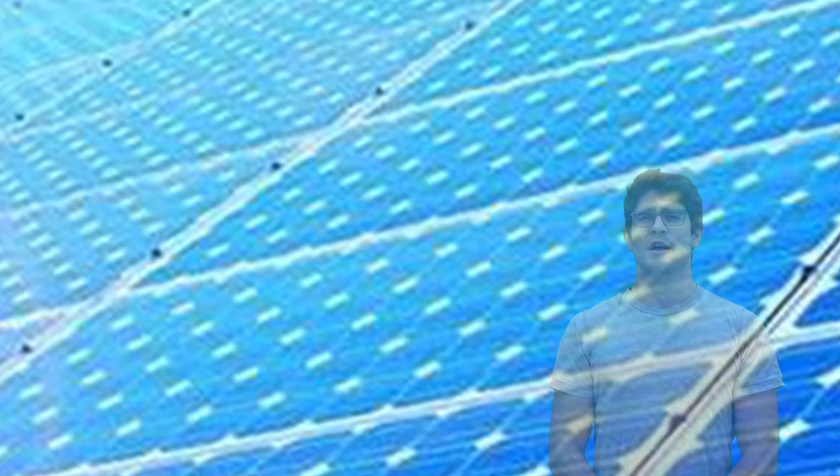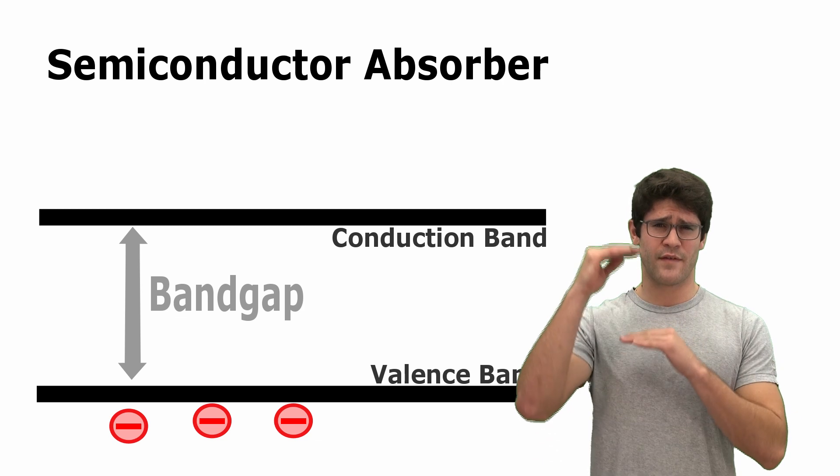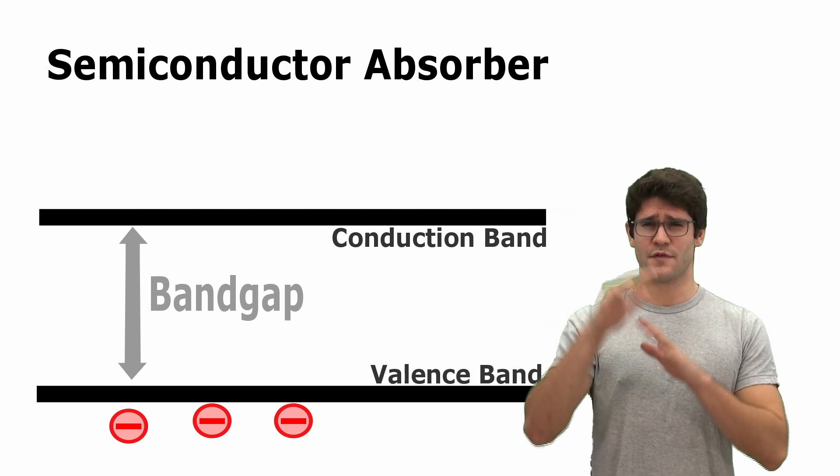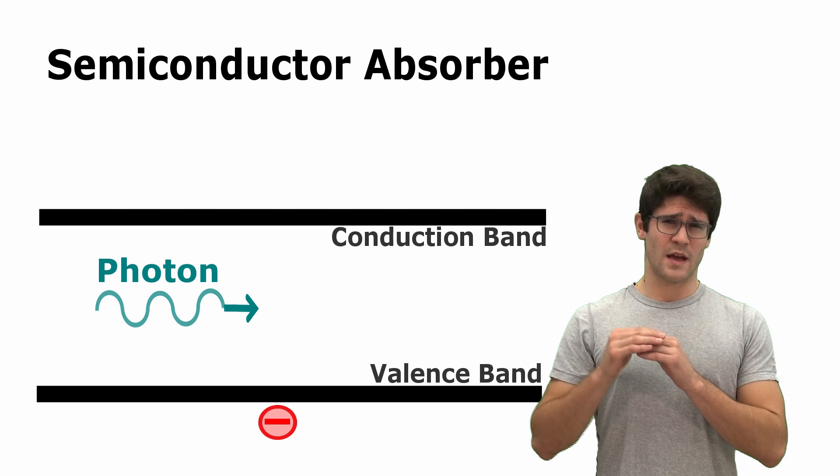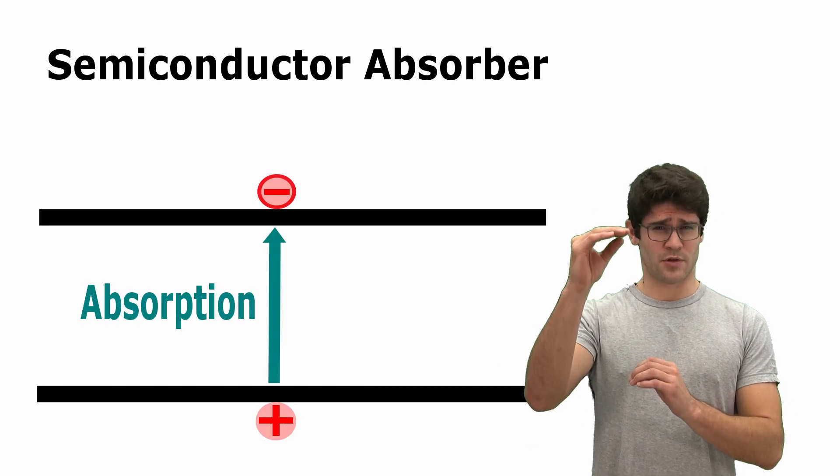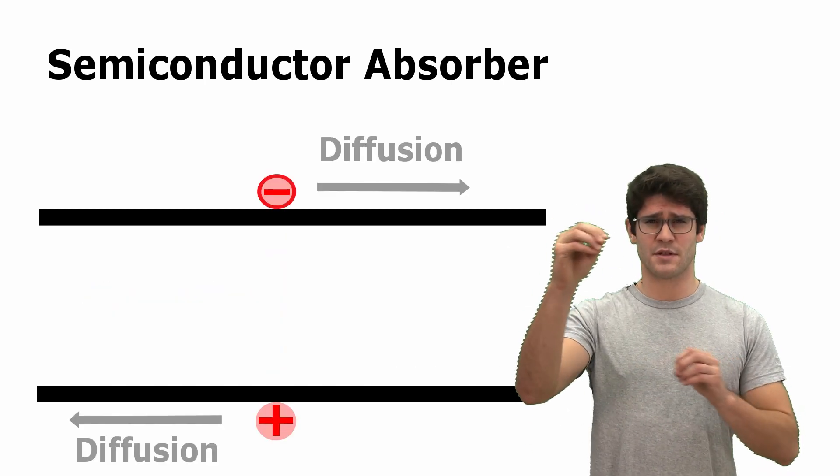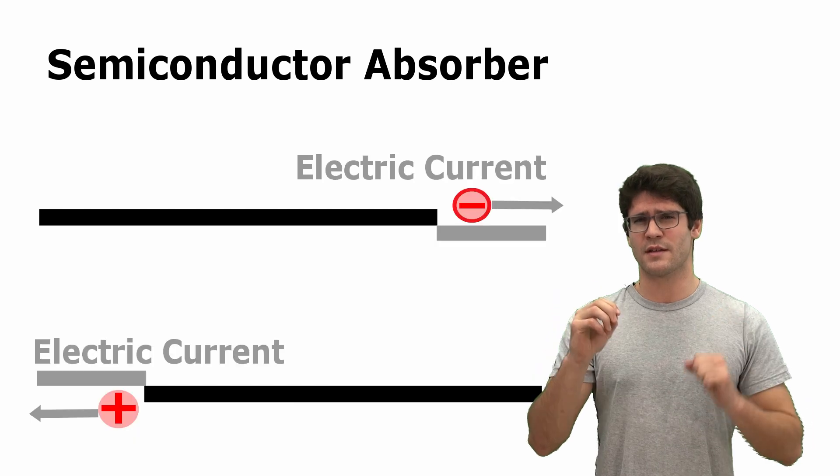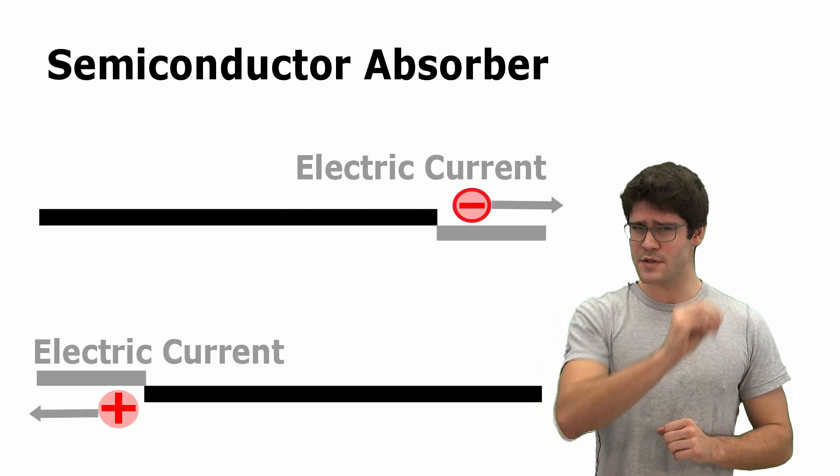Conventional solar cells are based on semiconductors which have a band gap, an energy band where occupation is forbidden. Photons with energy greater than the band gap can be absorbed, generating charge carriers that diffuse through the material to be collected at selective contacts, producing electric current.